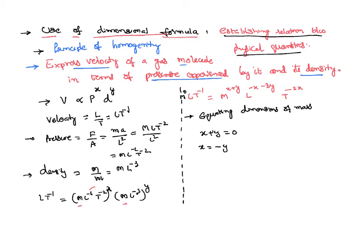Equating the dimensions of length: -x - 3y = 1.